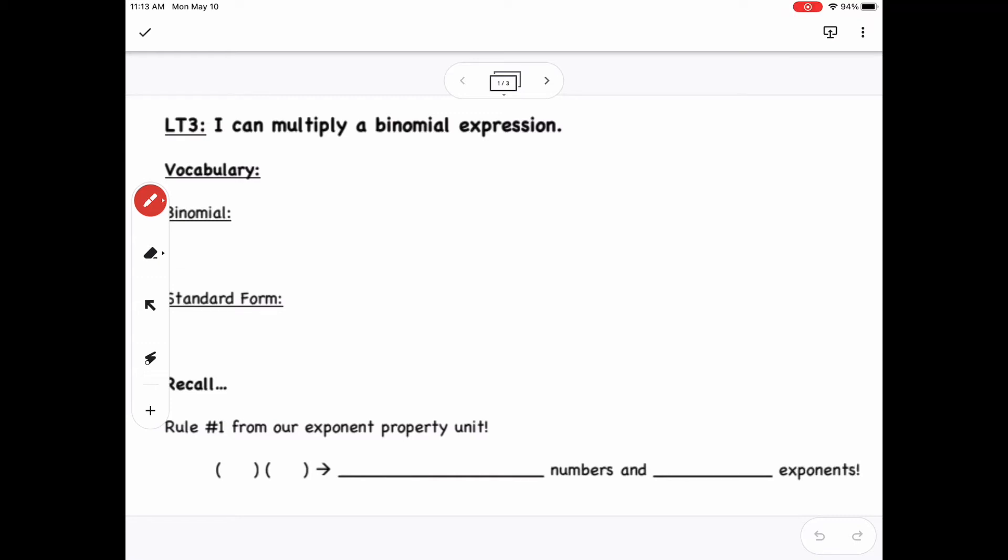Today's lesson is over learning target 3, where it states that I can multiply a binomial expression. A binomial is a specific kind of algebraic expression that has two terms. An example would be like 4x minus 6, or x plus 3.